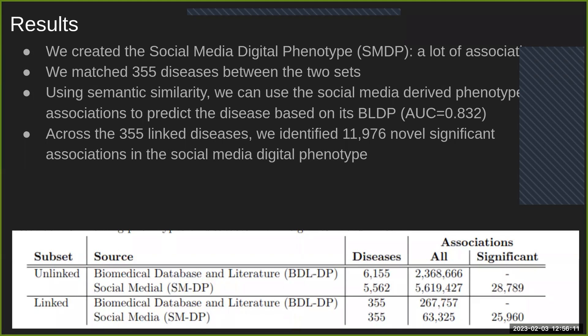On top of this, we identified nearly 12,000 novel associations — significant with our very high bar in terms of both overall occurrence and the actual association between disease and phenotype — and these have no positive association at all in the biomedical database and literature set. Something must truly be under-focused and invisible across all those datasets to be considered a novel phenotype here, so the fact that the number is so high is quite interesting.